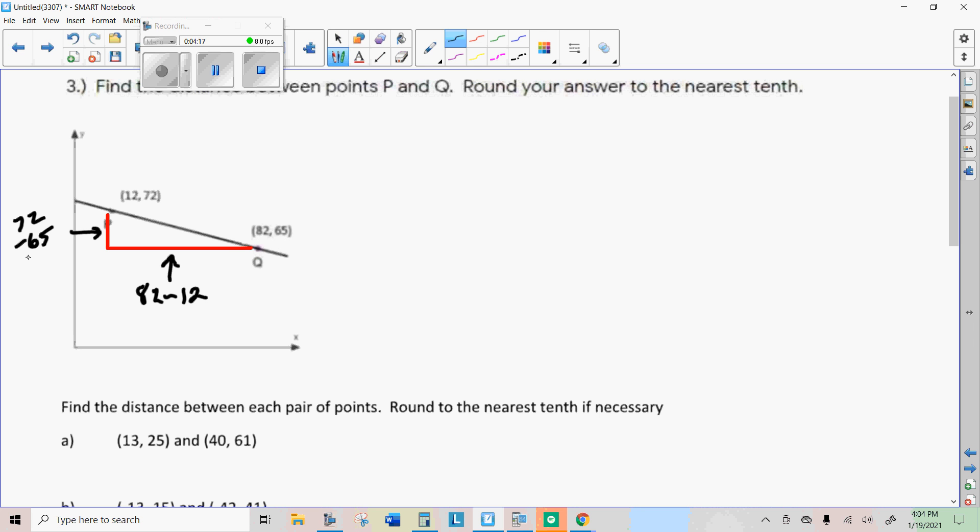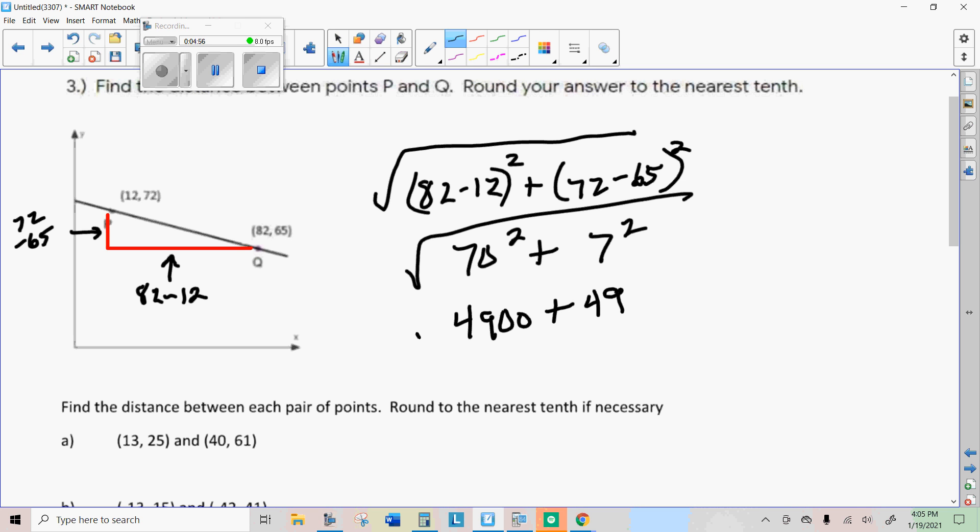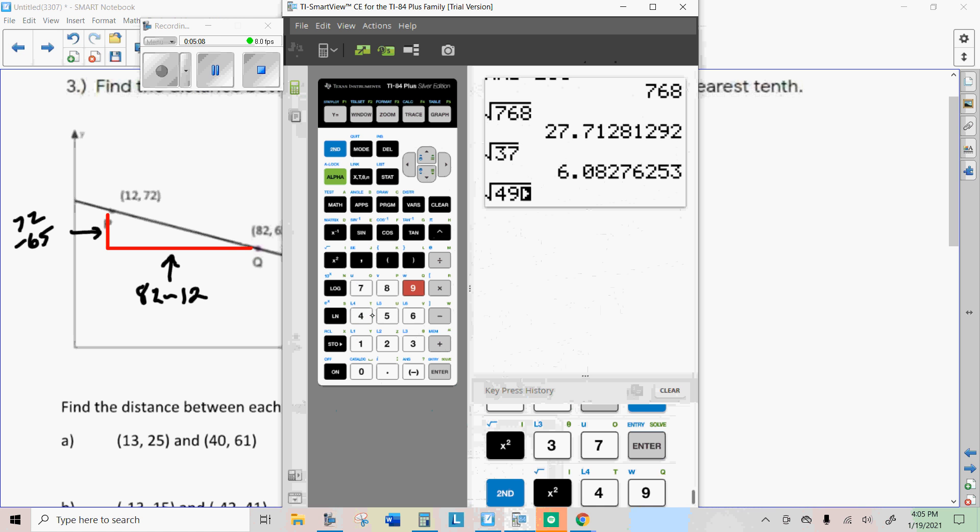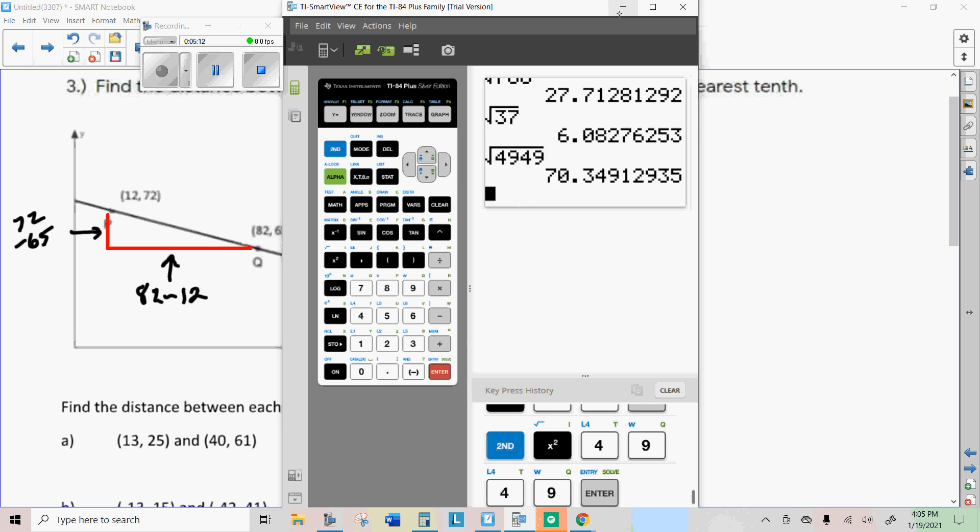I always put the larger number in first. That way, I don't end up with negatives. So, using the distance formula, it looks like this. The x coordinates here, 82 minus 12. Got to square that number. This is just doing Pythagorean's theorem now. And then you do the 72 minus 65 for the vertical distance. And so, 82 minus 12 is 70 squared. 72 minus 65 is 7 squared. So, this is 4900 plus 49, which is 4949. And then we have to do the square root of that. That's about 70.3 if we round it to the nearest tenth.